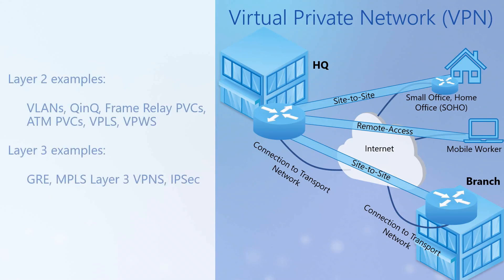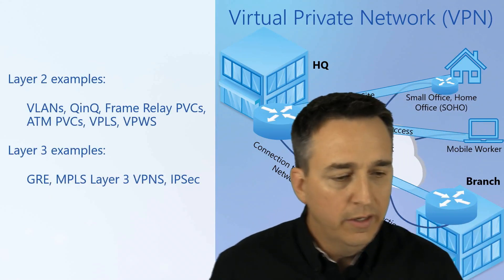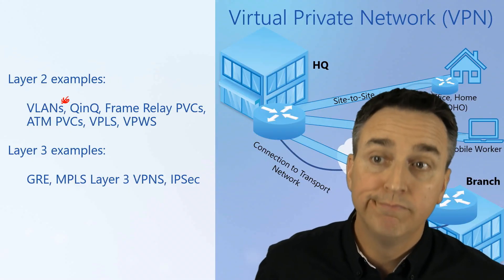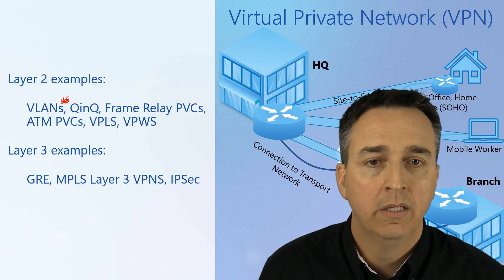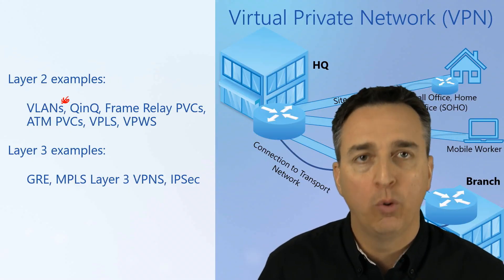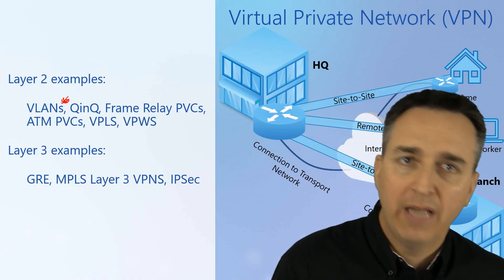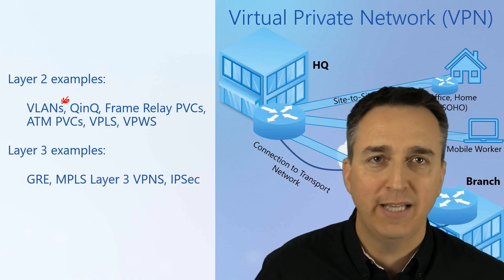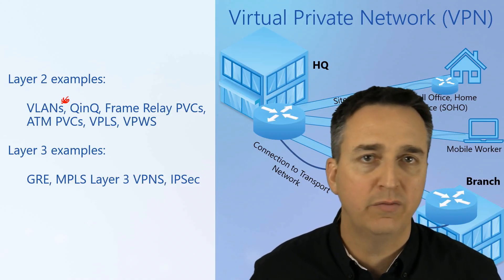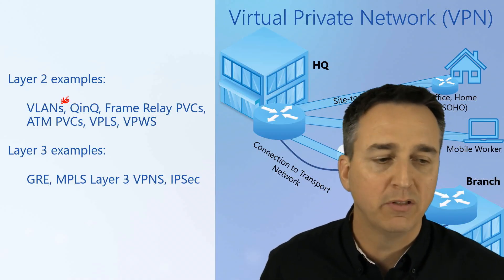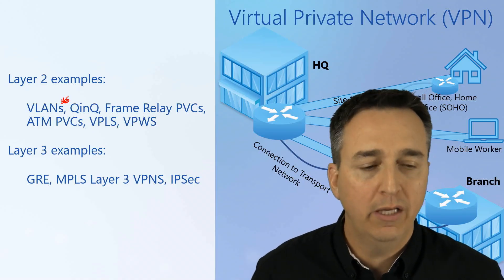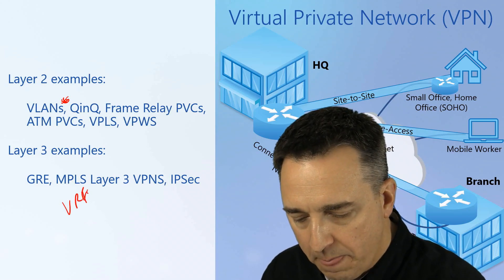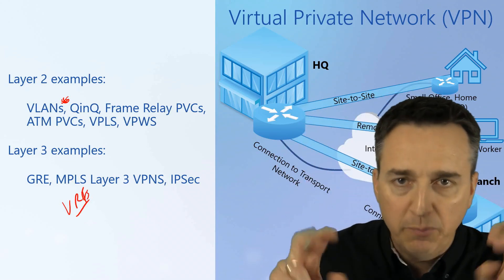VPNs come in many different flavors — layer 2 VPNs and layer 3 VPNs. A lot of people get shocked when you say VLANs are a type of VPN, but they are. We're transporting some other type of traffic over some other type of network — that is a VPN. There's Q-in-Q, frame relay PVCs, ATM PVCs, VPLS, VPWS — all different types of layer 2 VPNs. At layer 3, you have GRE, MPLS layer 3 VPNs, IPsec, and VRFs — all different types of VPNs.